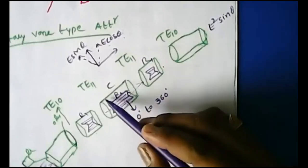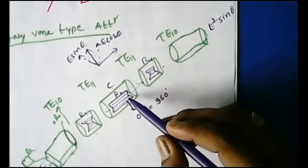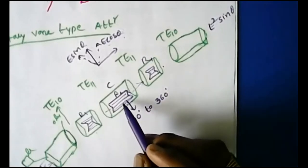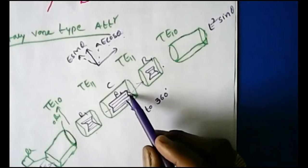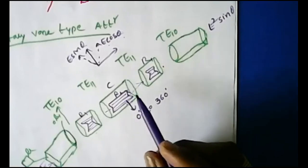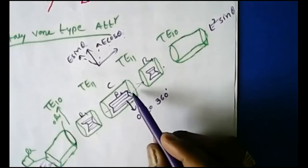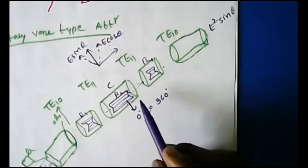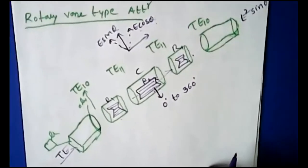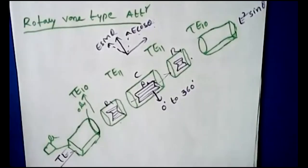By changing or rotating the resistive card, depending on the type of signals to be attenuated, we can attenuate either E sinθ or E cosθ terms by orienting the card parallel or perpendicular to the electric field accordingly. This is how we maintain variable attenuation using the rotary vane type attenuator.